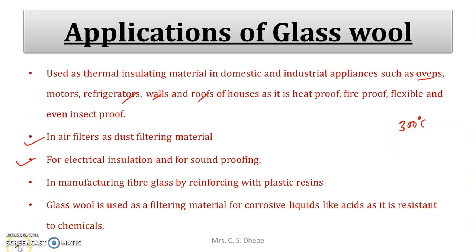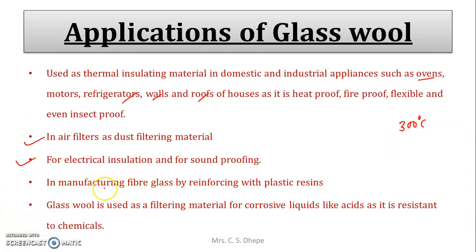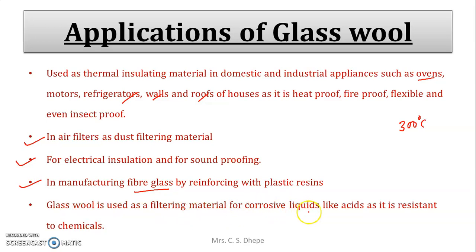Glass wool is used in the manufacturing of fiberglass by reinforcing with plastic resin. Additionally, glass wool is used as a filtering material for corrosive liquids like acids, because it is resistant to chemicals.